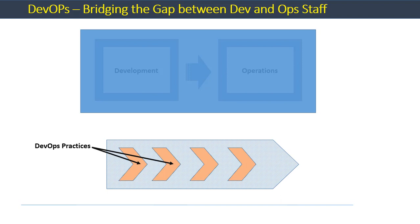DevOps also refers to the concept where software developers and ops staff collaborate throughout the software development and deployment lifecycle to ensure the delivery of quality code to production. It eliminates the silo mentality and the finger pointing that has existed in IT environments for the past many years. This elimination of silos has allowed software developers to understand the complications inherent in running software in the operations environment, making them sensitive to stability and reliability issues important for production and operations staff.